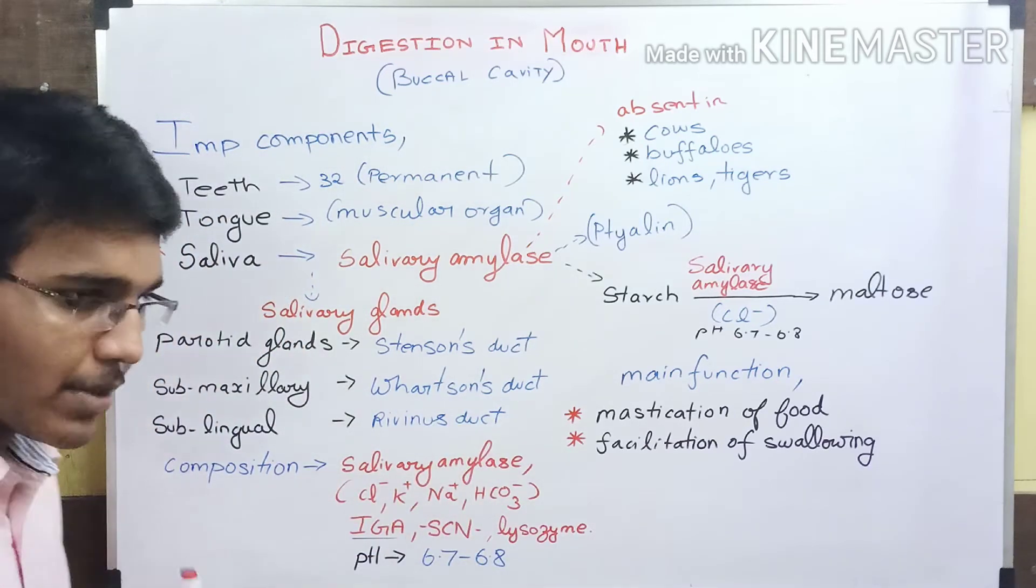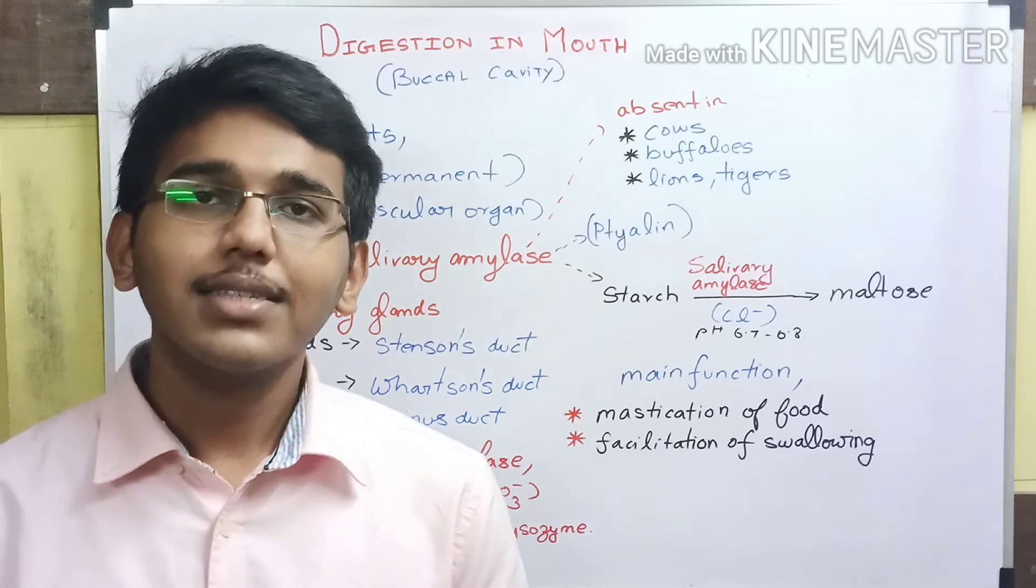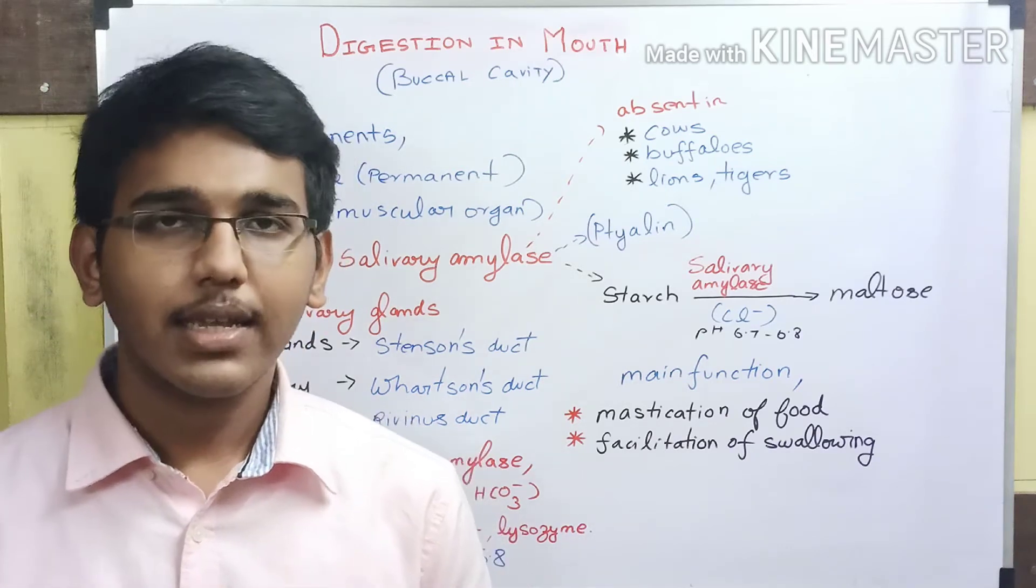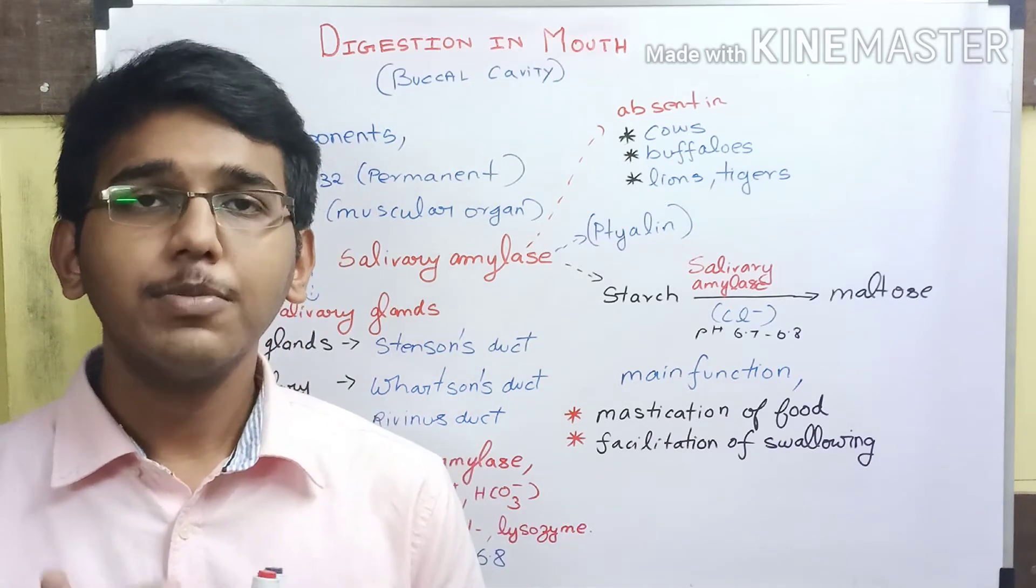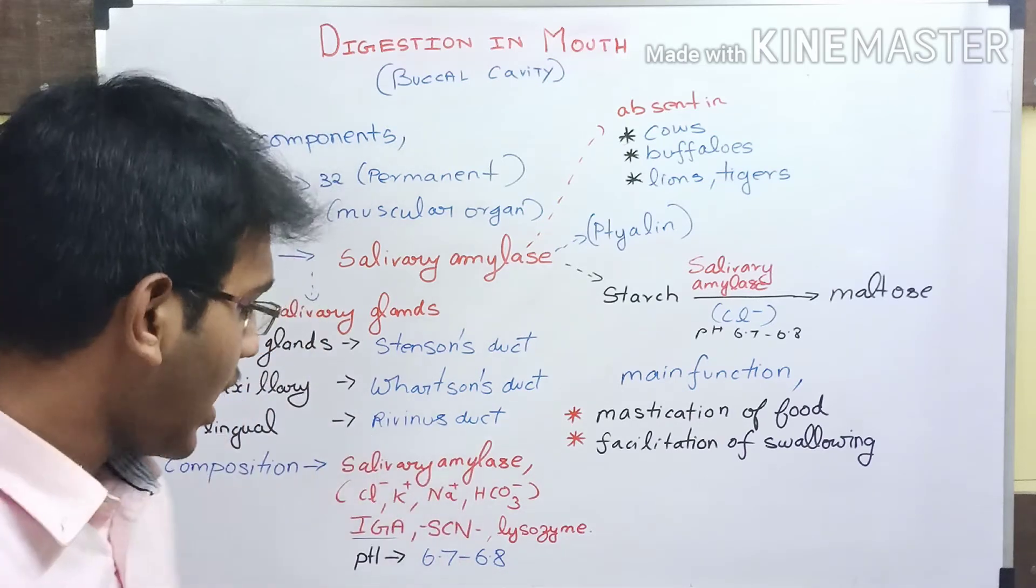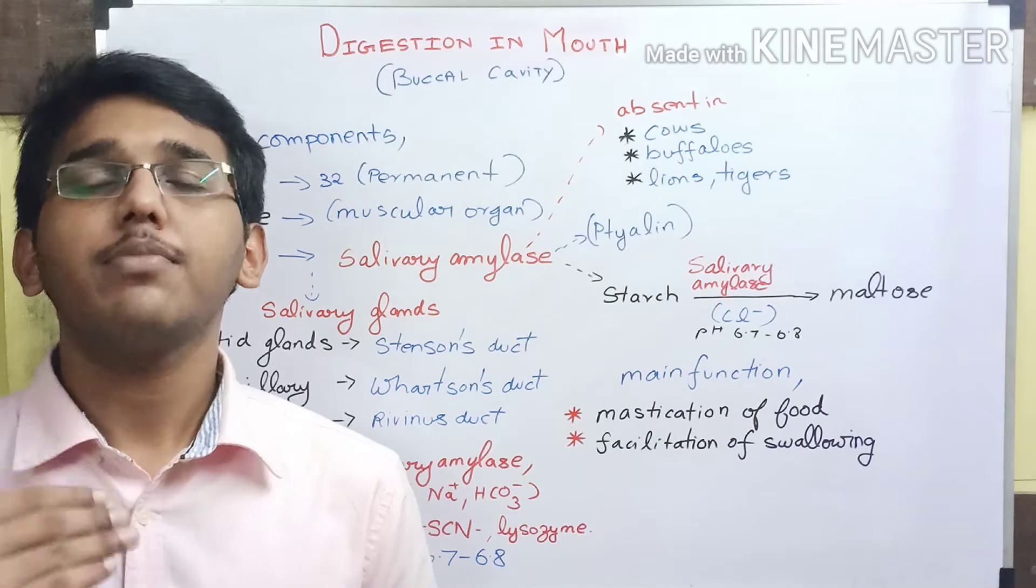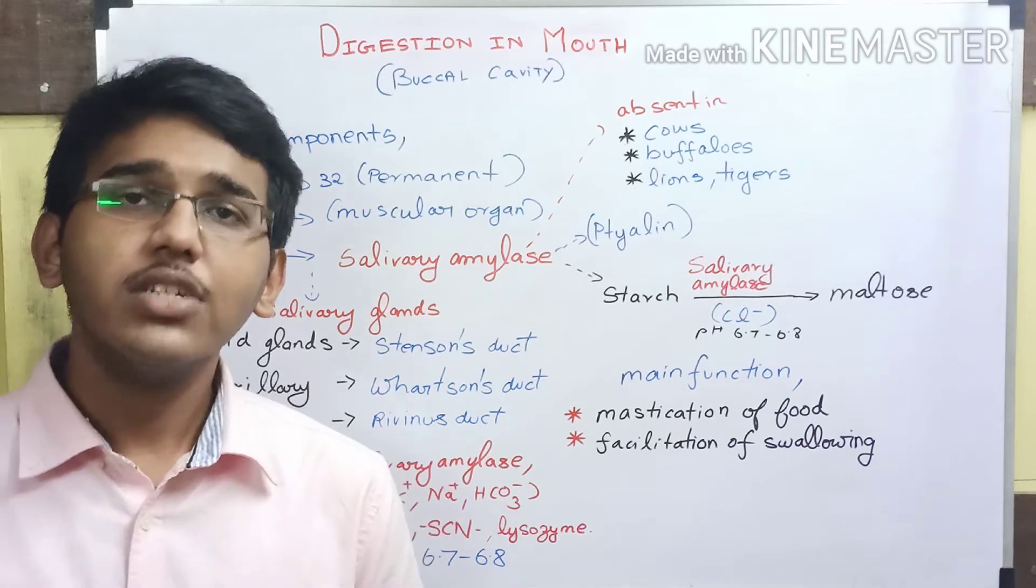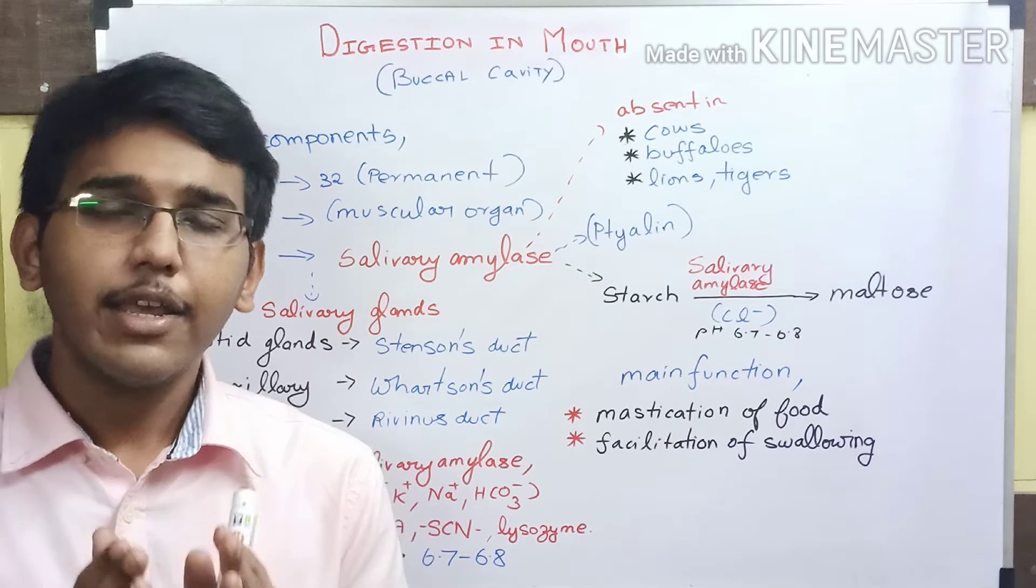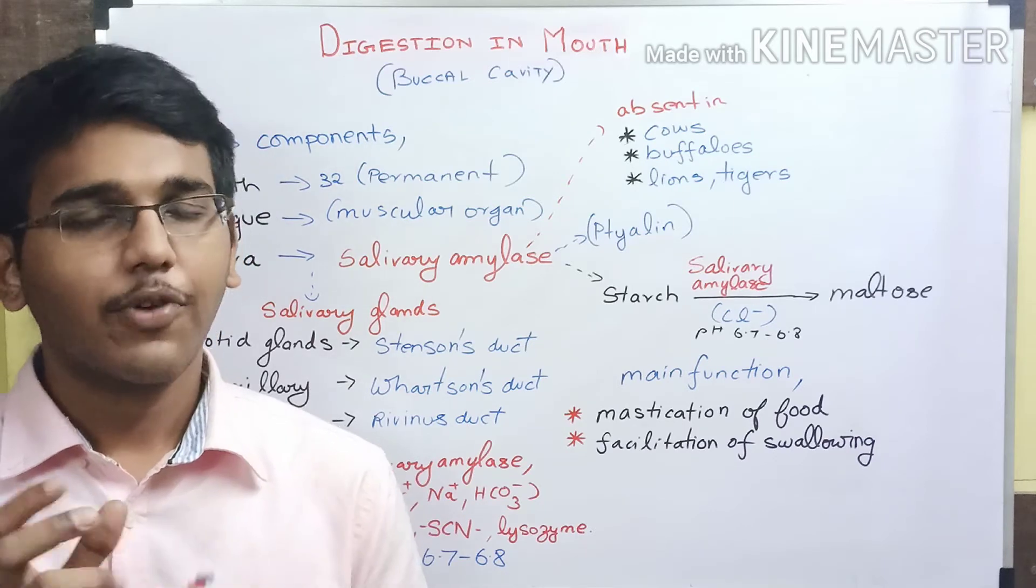IgA is an antibody that works against antigens present in microbes and helps in destruction of the microbes. The thiocyanate compound is produced in the buccal cavity. When oxidized, thiocyanate inhibits the growth of pathogens, for example oral bacteria, and inhibits the respiratory metabolism of oral bacteria.